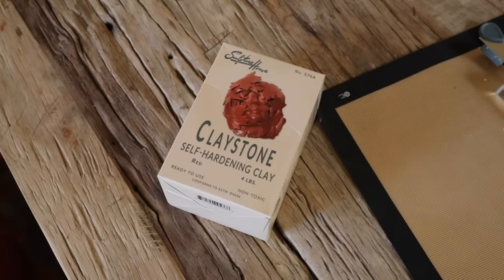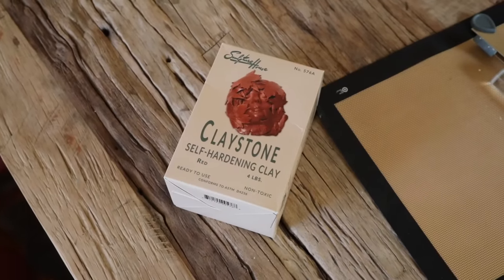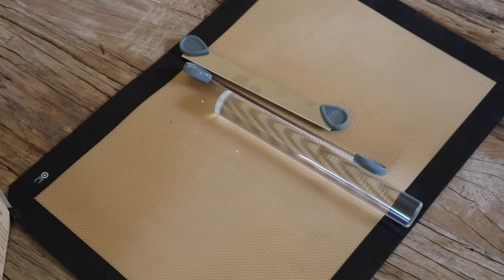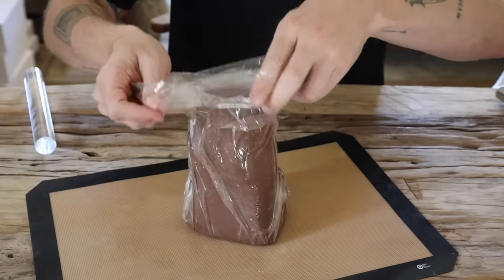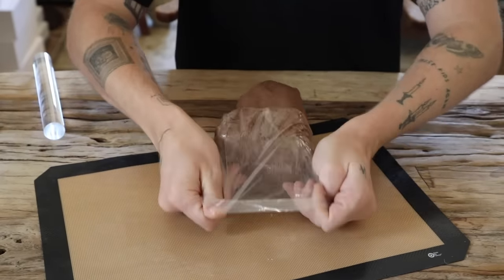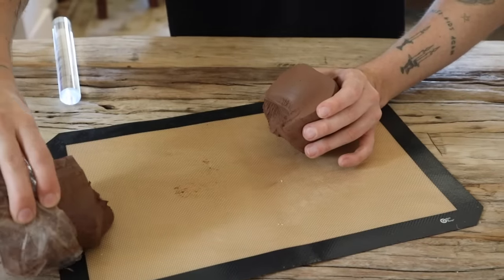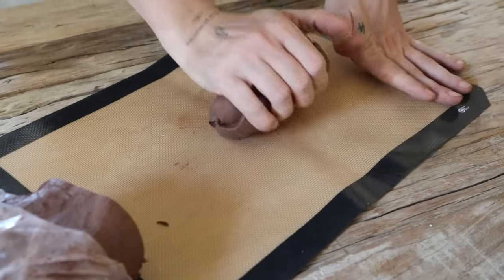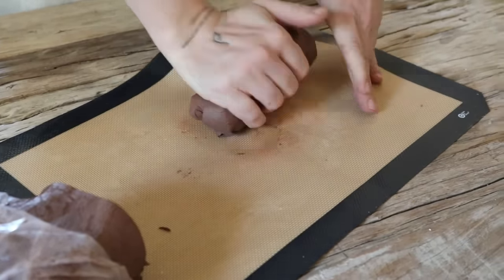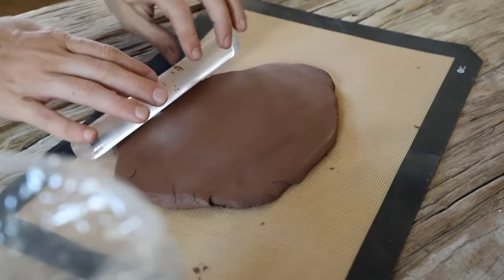I had to save the best for last. I found this product called claystone, which is a self-hardening clay. It's a terracotta clay, and I got this at Blick Art Supply. I cut off a small chunk because we're going to be creating a customized wall candle sconce. I love this because it's a natural terracotta tone of clay, but it's also an air dry clay.